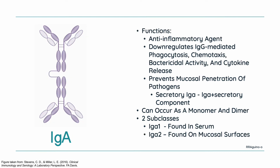Next, we have IgA. IgA mainly functions as an anti-inflammatory agent. It is able to downregulate IgG-mediated phagocytosis, chemotaxis, bactericidal activity, and cytokine release. IgA also functions in preventing mucosal penetration of pathogens — the specific IgA responsible for this is called secretory IgA, which is IgA with a secretory component attached. IgA can occur as a monomer or a dimer. There are two subclasses: IgA1, found in serum, and IgA2, the only antibody found on mucosal surfaces, making IgA2 the antibody responsible for mucosal immunity.